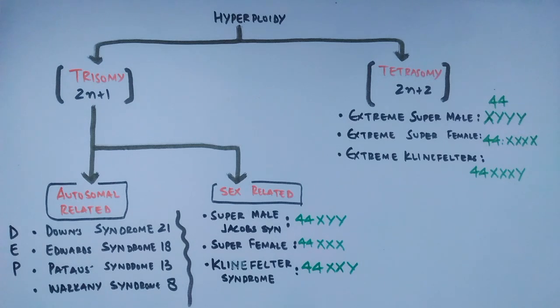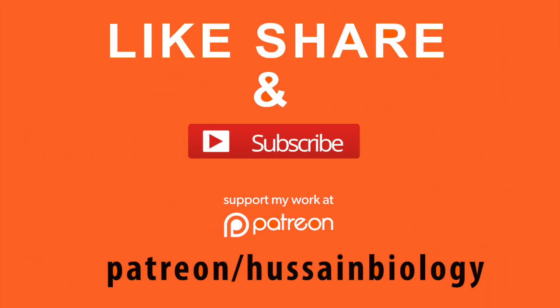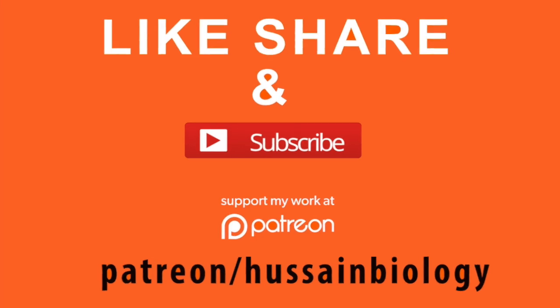This concludes our discussion on aneuploidy, where we saw the classification of aneuploidy and various examples with different chromosome numbers. In the upcoming video, we will discuss trisomy in detail. If you liked the video, give it a thumbs up, consider supporting on Patreon, and make sure to subscribe. Thanks.